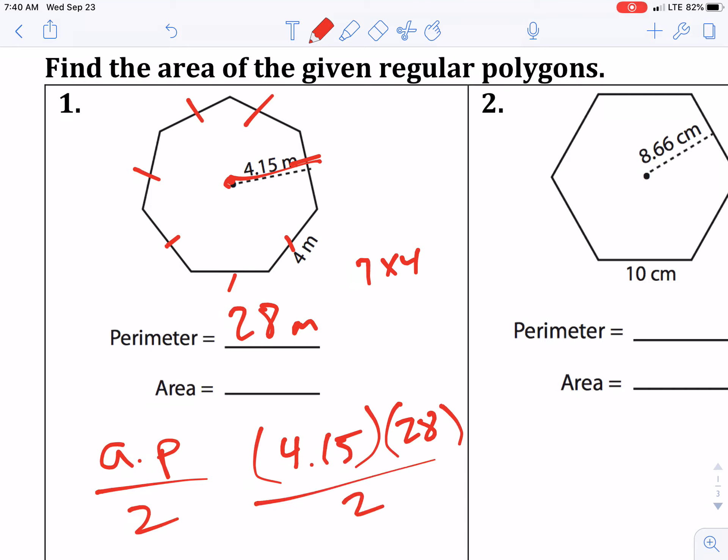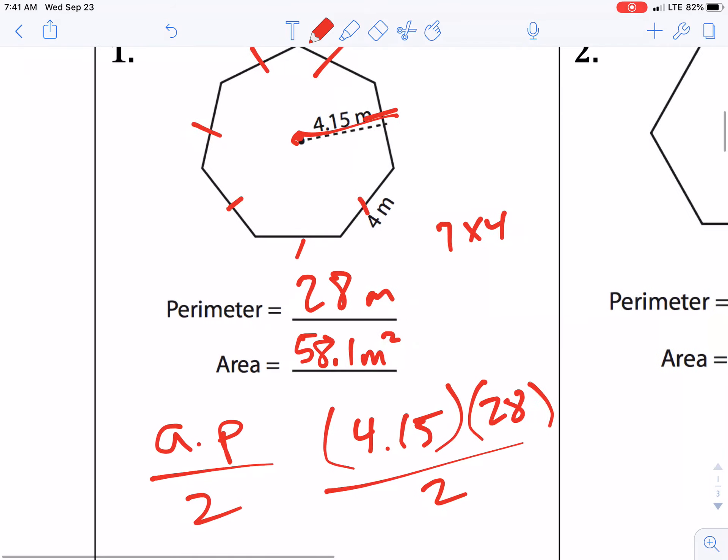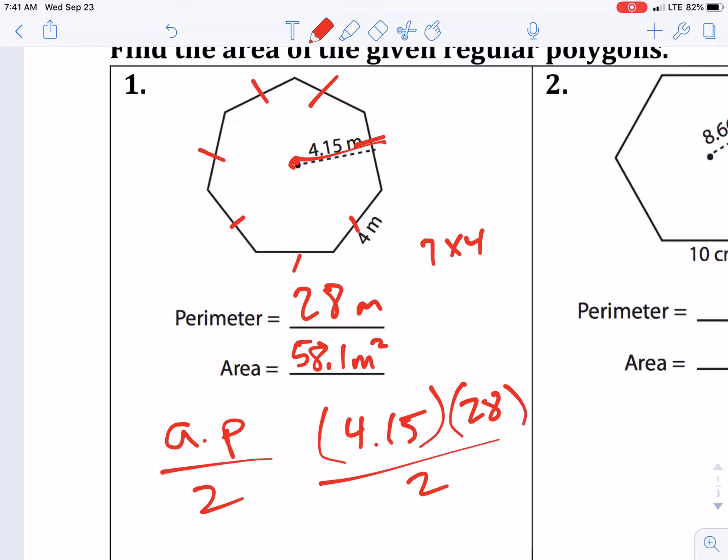Multiply them together, and then divide by two, and you get your final answer. All right, don't forget about that perimeter. You got to go through and find that, so it's 58.1 square meters. Okay, so it's just finding that perimeter. How many sides does it have?